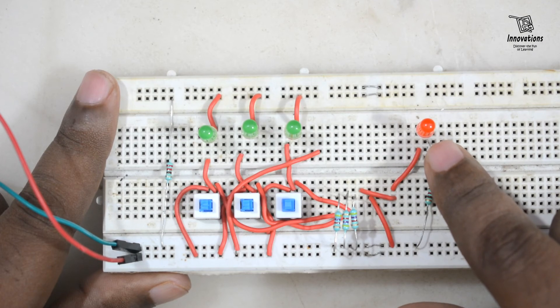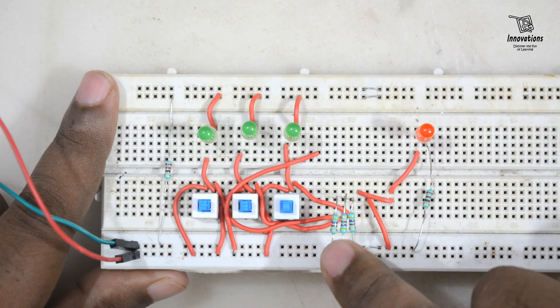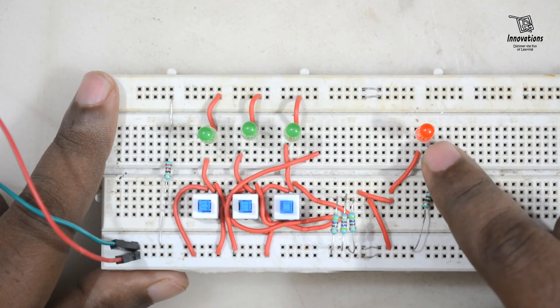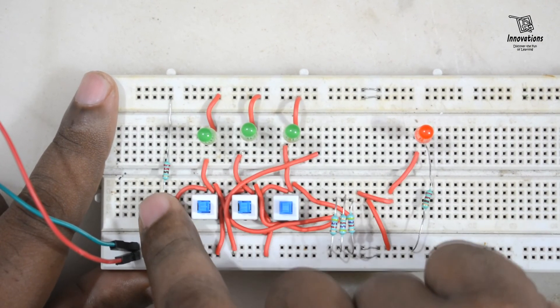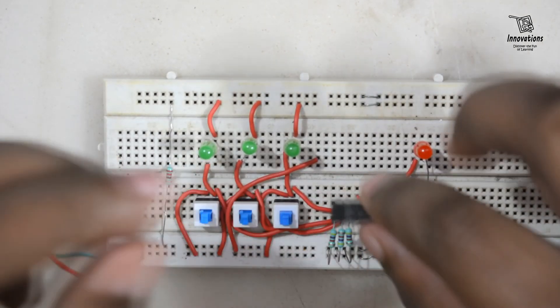When it glows the output is 1. When it does not glow the output is 0. These 3 are the pull down resistances that we have shown in the circuit. This is the current limiting resistor for the output LED. This is the current limiting resistor for the input LED. Now let's put the IC on the breadboard.